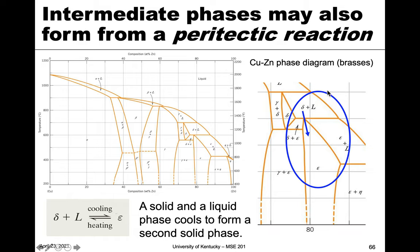If we look at the copper-zinc phase diagram — so this is bronze and brass — there are actually a couple of examples of peritectics in the brass system. Above a certain phase region you see delta plus liquid, and then right at the peritectic point, if we decrease temperature, we see that we have just epsilon. There's a triple point — a single point at which three phases are in equilibrium. That's the peritectic reaction: at high temperature, one solid plus a liquid; at low temperature, a different solid.